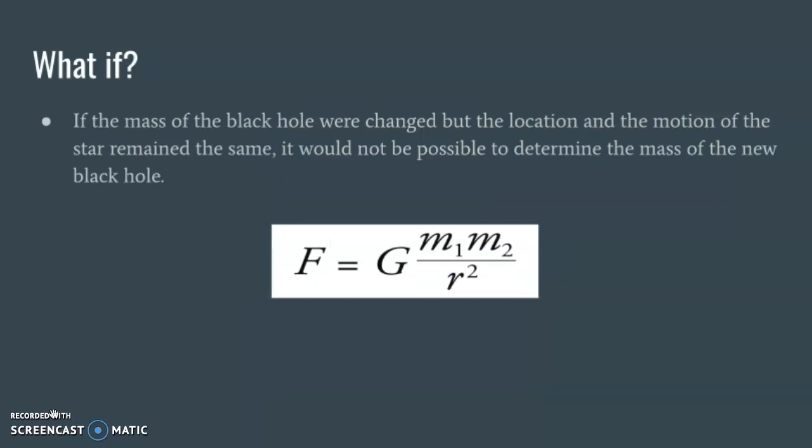Finally, if the mass of the black hole were changed, but the location and the motion of the star remain the same, it would not be possible to determine the mass of the new black hole. This is because of the force of gravity equation. Since the other variables in the equation would not change, the new mass could not be determined.